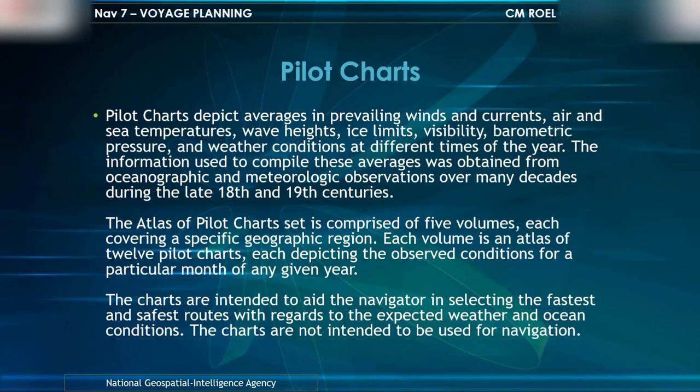The Atlas of Pilot Charts set is comprised of five volumes, each covering a specific geographic region. Each volume is an atlas of 12 pilot charts, each depicting the observed conditions for a particular month of any given year. The charts are intended to aid the navigator in selecting the fastest and safest routes with regard to expected weather and ocean conditions, but are not intended to be used for navigation.